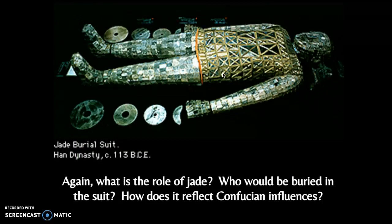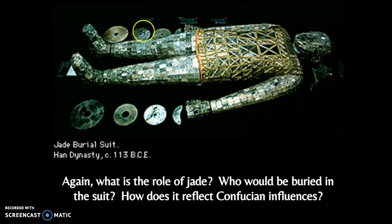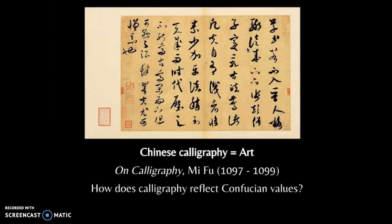We also see a continuing influence of jade — this is a burial suit found in the Han dynasty. Who do you think would have been buried in something like this? What rank in society would they have had, and how does Confucianism reflect someone being buried in a jade suit? You can also see the bi discs over here — the jade discs that would have been placed on important parts of the body.